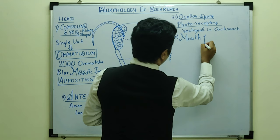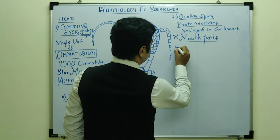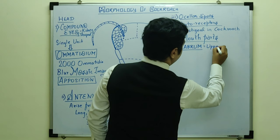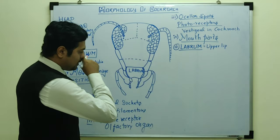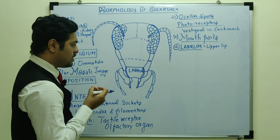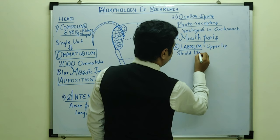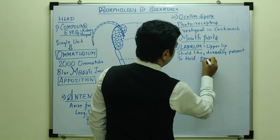The fourth major discussion is about the mouth parts. There are five structures to discuss in the mouth parts. The first is the labrum, which is the upper lip of the cockroach. It is a shield-like structure that covers the mouth from the dorsal surface. On its inner side it has sensory structures. Its major function is to hold the food.